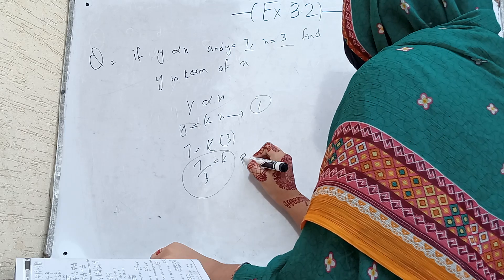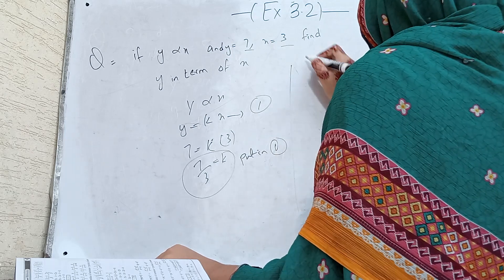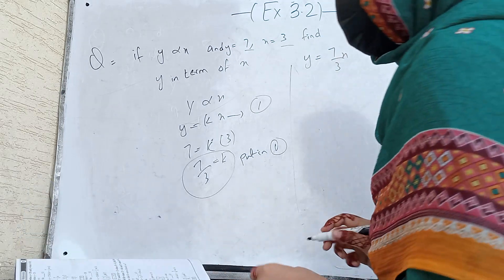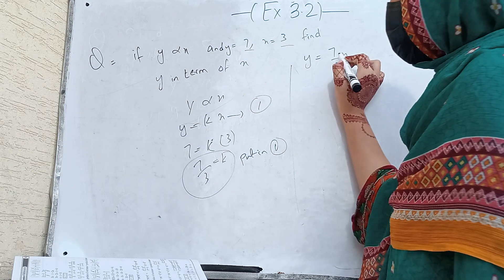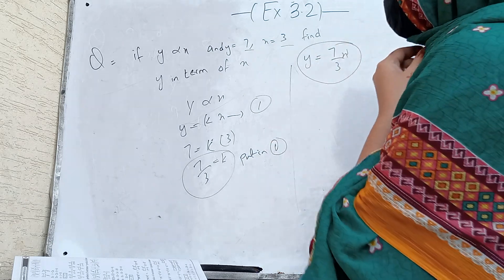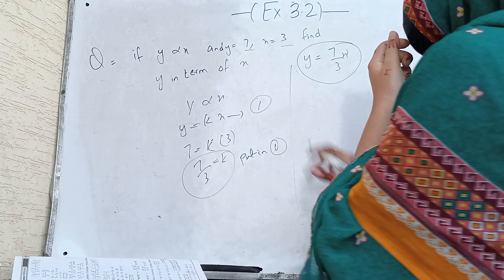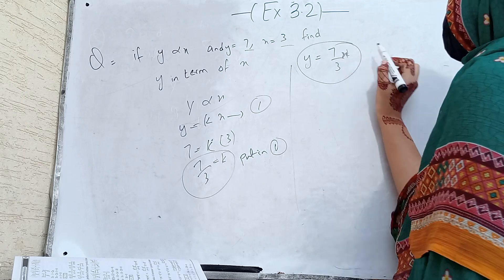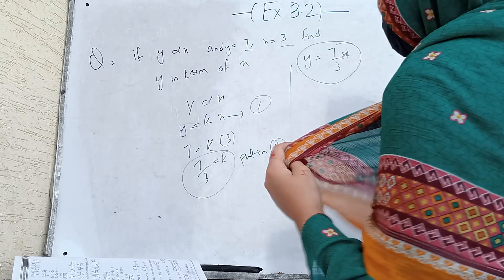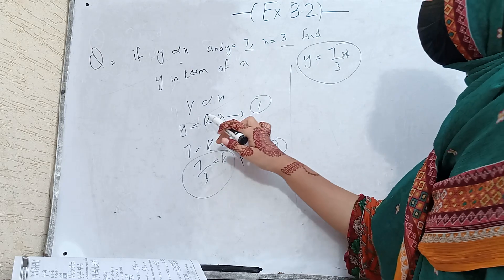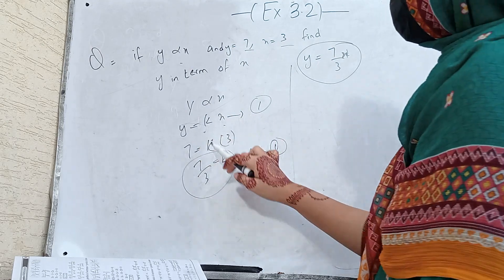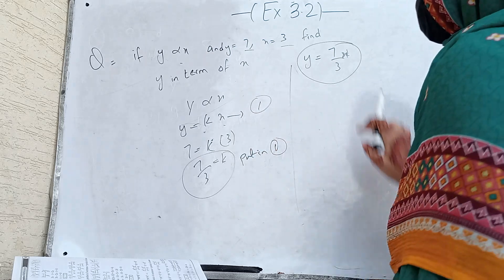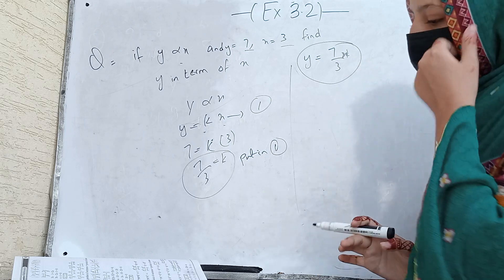We put k equal to 7 by 3 into the first equation, giving y equal to (7/3)x. This is the expression of y in terms of x. We found k equal to 7 by 3 and substituted it into the equation to get y equal to (7/3)x.